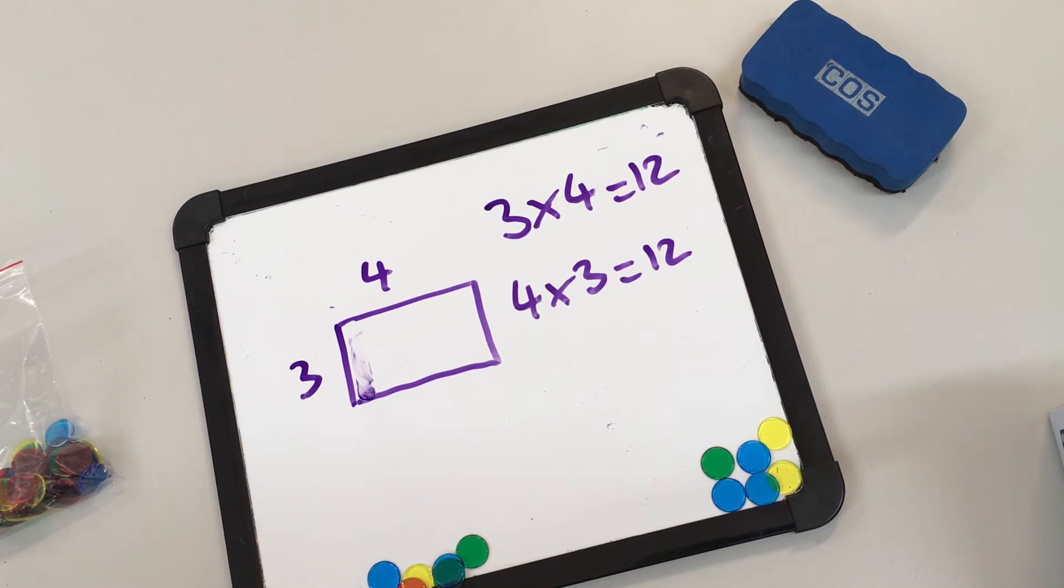And then anytime that we have to recall that fact, we can go, oh I remember looking at that fact that's on our fridge, let's go check it out. Or ask your child, three times four, let's visualize, what does that look like? I can see four rows of three, can you see that? No? Okay, let's try and build our array. Maybe we don't need to use all of the counters.